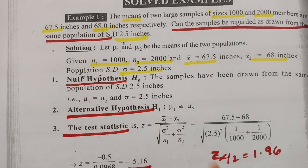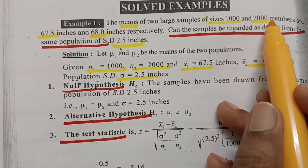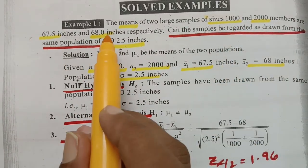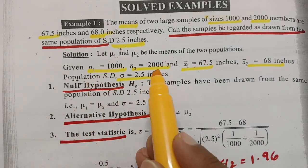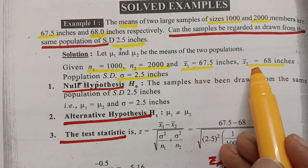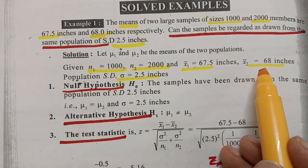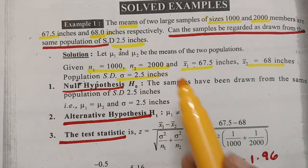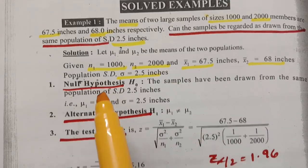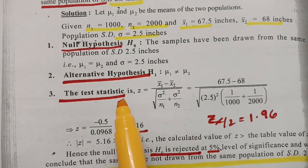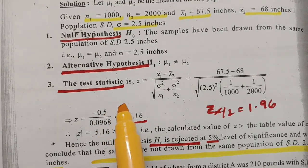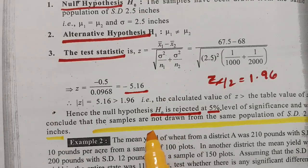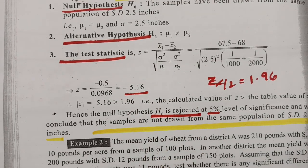To summarize the solution steps: underline all numerals, frame N1, N2, X1 bar, X2 bar, and standard deviation, then write null hypothesis, alternate hypothesis, test statistics, level of significance, and the conclusion. There should be five headings in your answer.